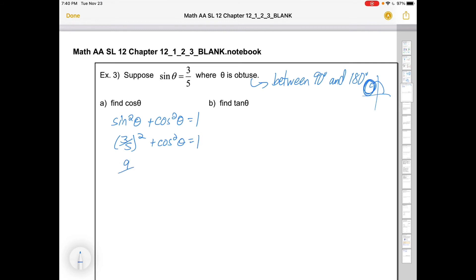Or three fifths squared, that's nine twenty fifths, plus cos squared theta is, I'm going to have to add and subtract some fractions here. So I'm going to just write the number one as twenty five over twenty five. And now I'll move things around because I want to isolate cosine. So I'll move that and subtract nine twenty fifths. That's going to give me cos squared theta is sixteen twenty fifths.